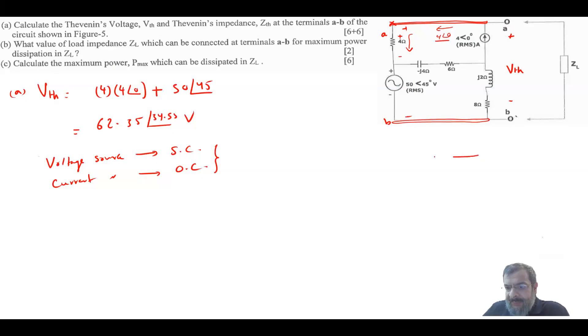So basically here you will have the 4 ohm. We will have here the minus J4, the 6 ohm, J28 ohm. This would be a short circuit. The voltage supply would be a short circuit. And the current source would be an open circuit. So now I want to find Z Thevenin between A and B.